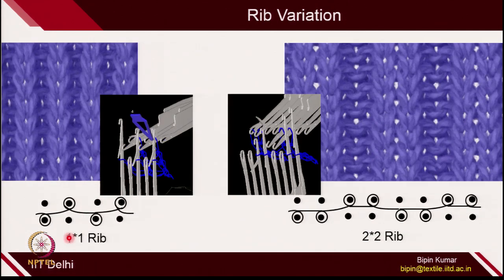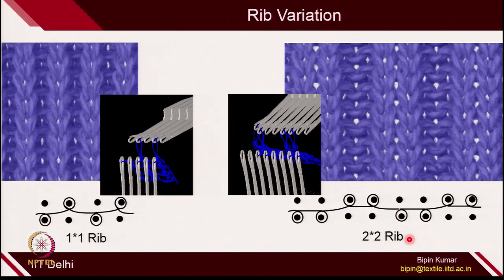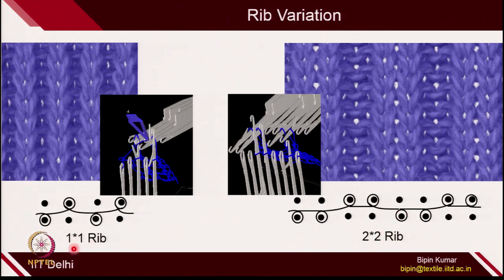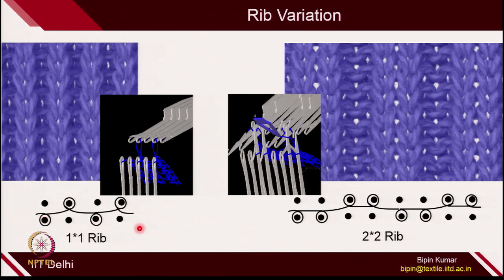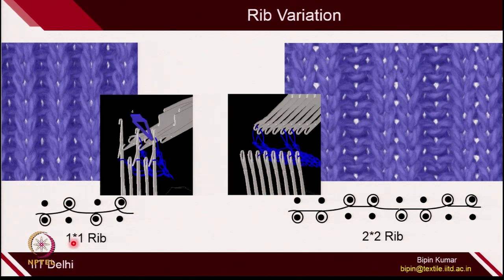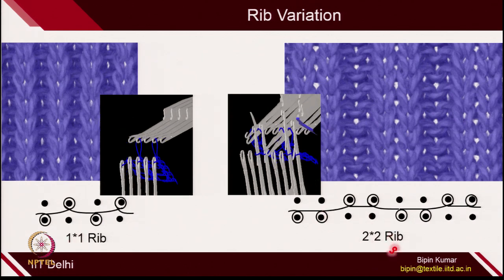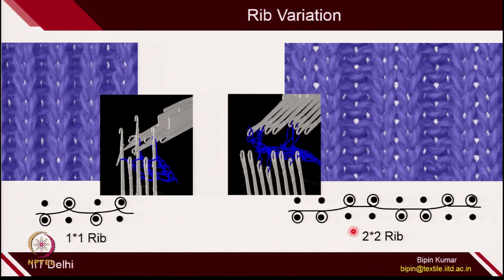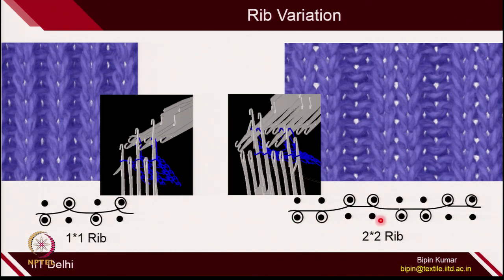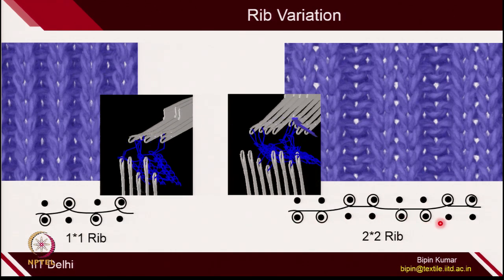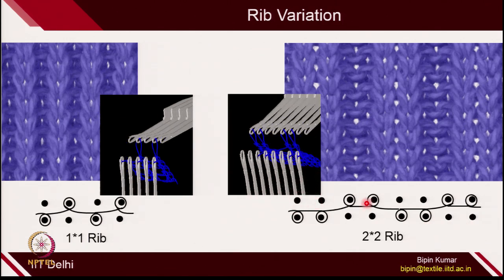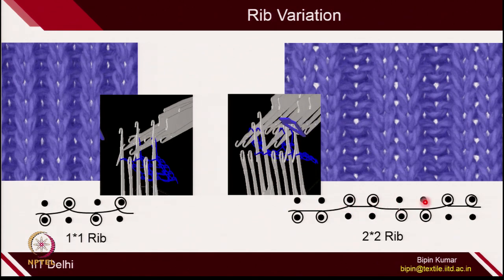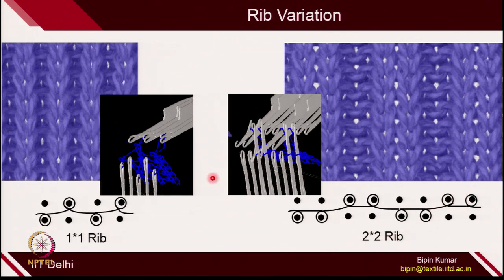You can also go from 1×1 rib to 2×2 rib. In 2×2 rib, on both beds 2 needles are operating and 2 are sitting idle, then 2 are operating, 2 are sitting idle. Similarly on the back bed, 2 needles are not operating and 2 needles are operating. This is 2×2 rib.